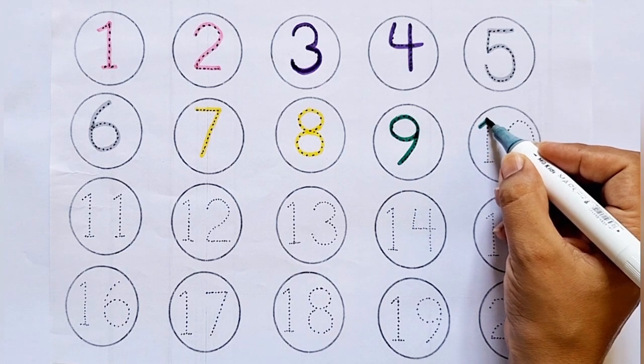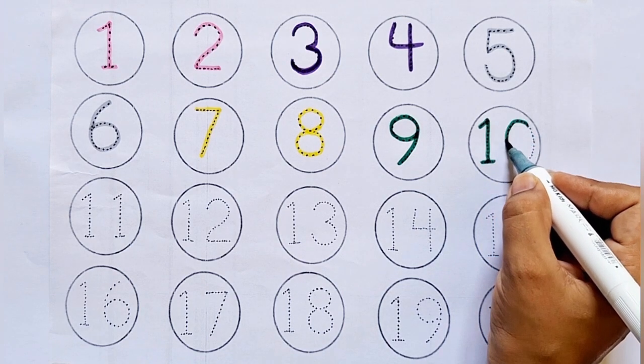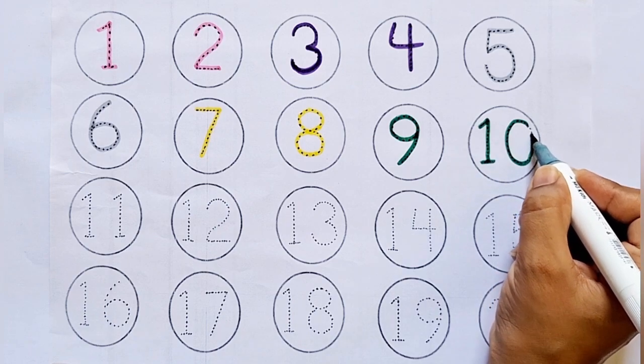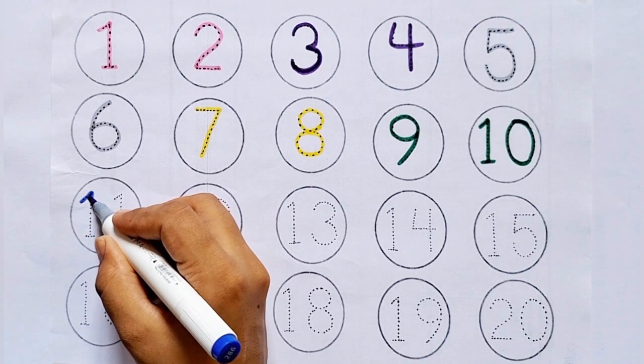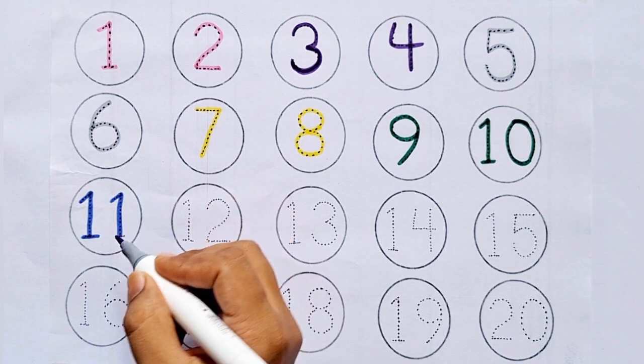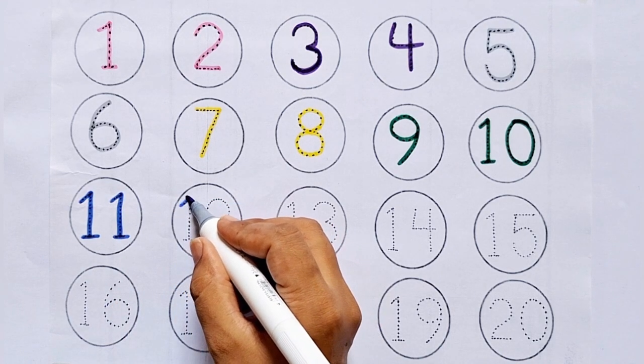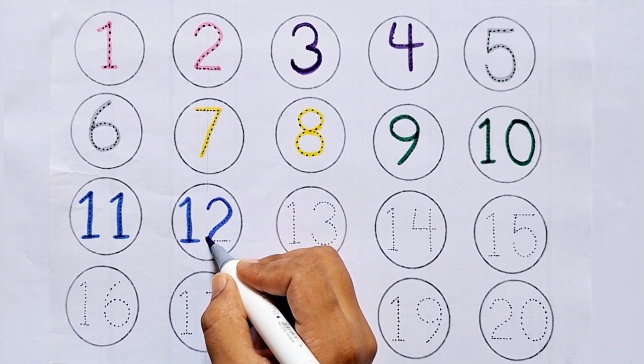10. This is 10. 1-0, 10. After 9 comes 10. 11. 1-1, 11. After 10 comes 11. 12. 1-2, 12. After 11 comes 12.